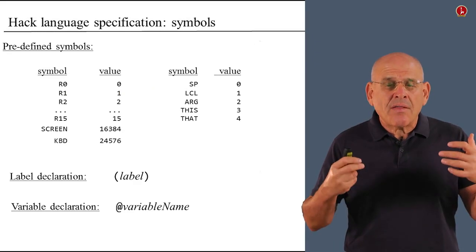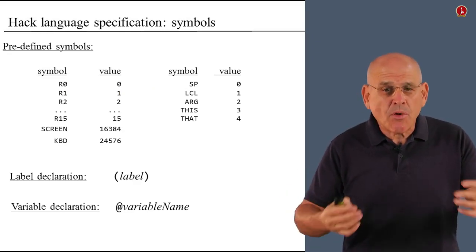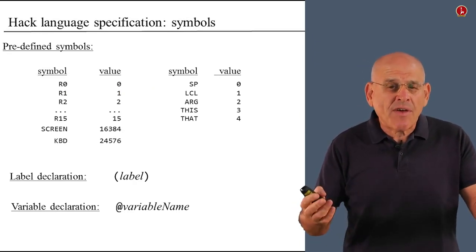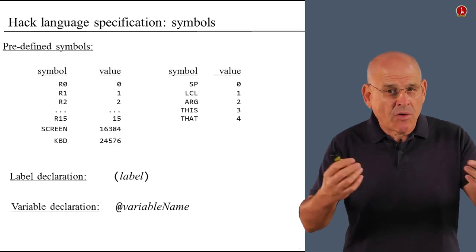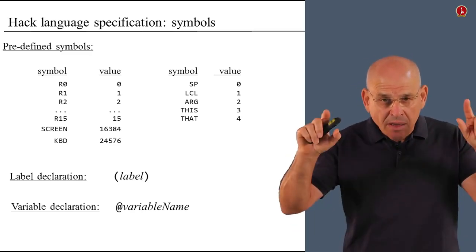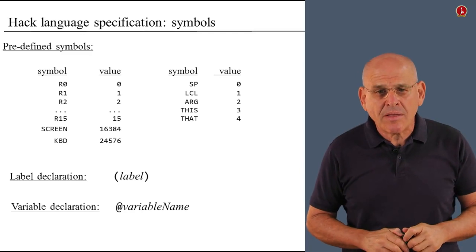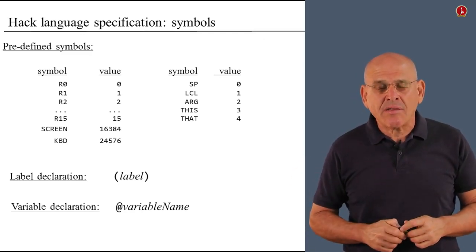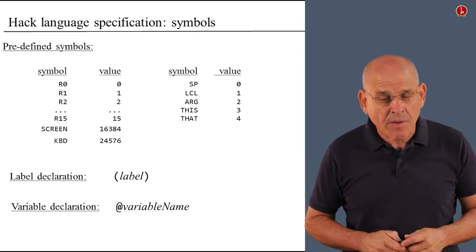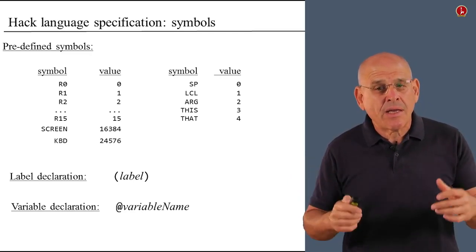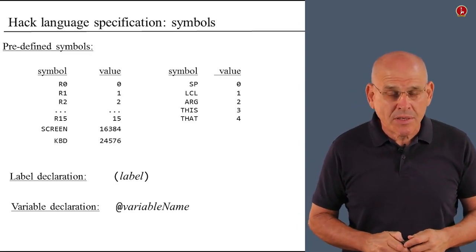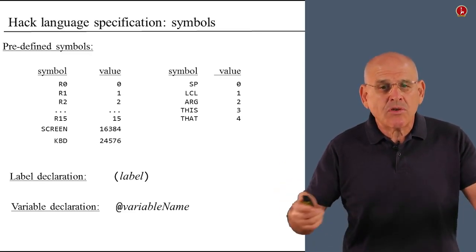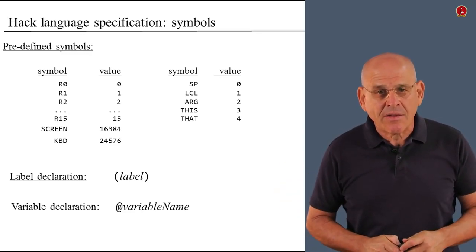Finally, the Hack language features symbols. The programmer is invited to use some predefined symbols, and also the programmer is invited to invent symbols of his or her own, using the label declaration statement and at statements or A instructions that are designed to declare and use variables. So this is a complete description of the Hack machine language. Given this description, you should be able to develop the desired assembler.